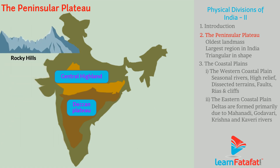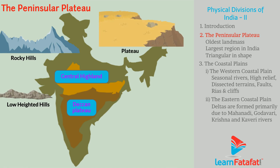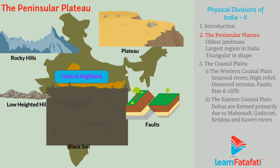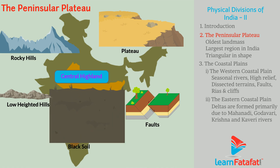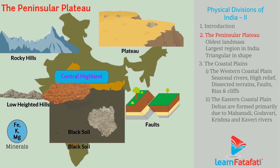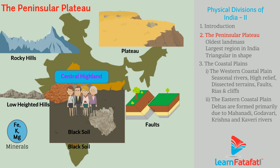Rocky hills, plateaus, separated low-height hills and falls are found here. The region has fertile black soil, which is rich in mineral resources. However, variation can be seen across the region, and hence the distribution of human population is uneven.